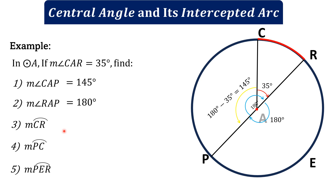Arc CR is the intercepted arc of angle CAR. The theorem states that the measure of a central angle is equal to its intercepted arc. Since angle CAR measures 35 degrees, arc CR also measures 35 degrees. Next, the measure of arc PC.